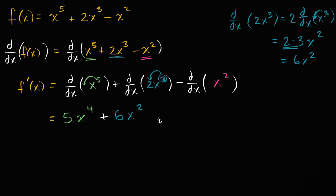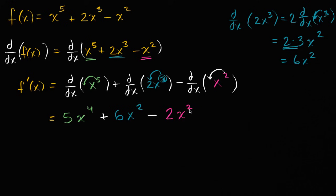And then finally, we have minus, and we use the power rule here. Bring the two out front and decrement the exponent, so it's going to be two times x to the two minus one power, which is just one — so we write that as two x. Just like that, we've been able to figure out the derivative of f.